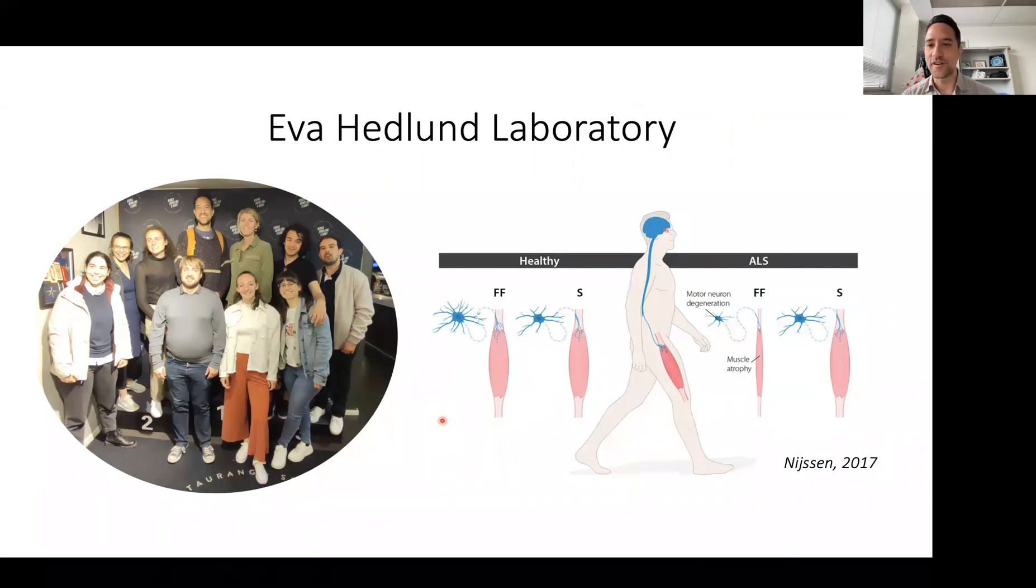There's a lot of work going on using patient tissue and iPSCs harboring ALS mutations. The Hedlund lab tries to understand mechanisms that might be responsible for the degeneration of this connection between spinal cord motor neurons and their peripheral muscles.